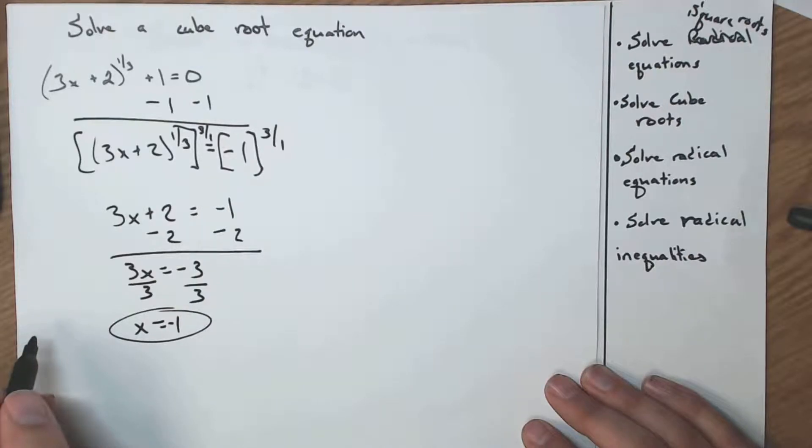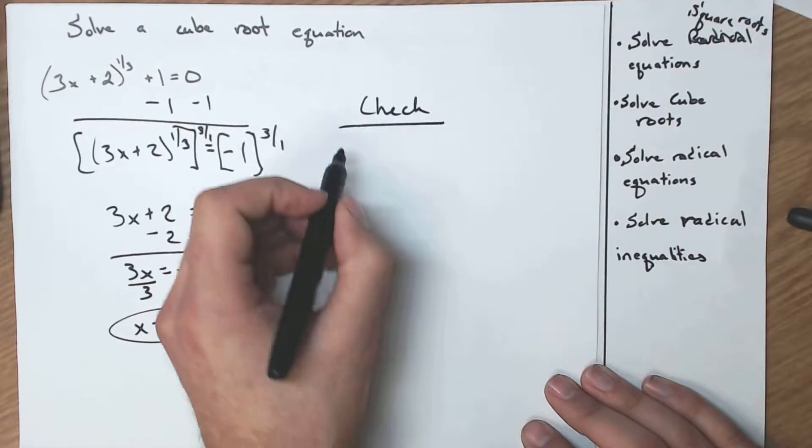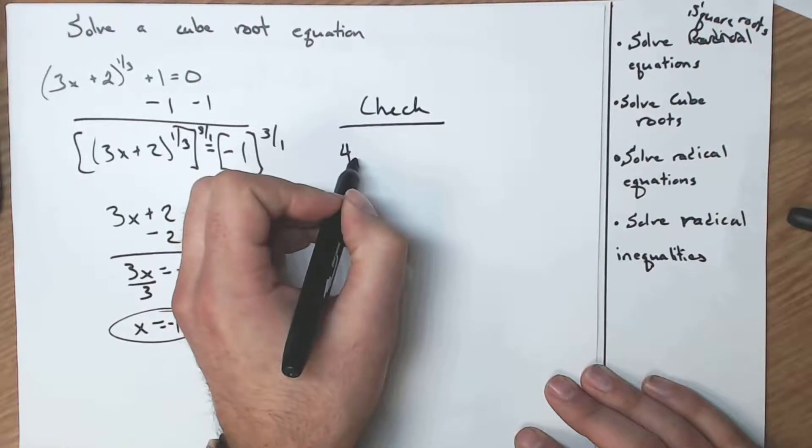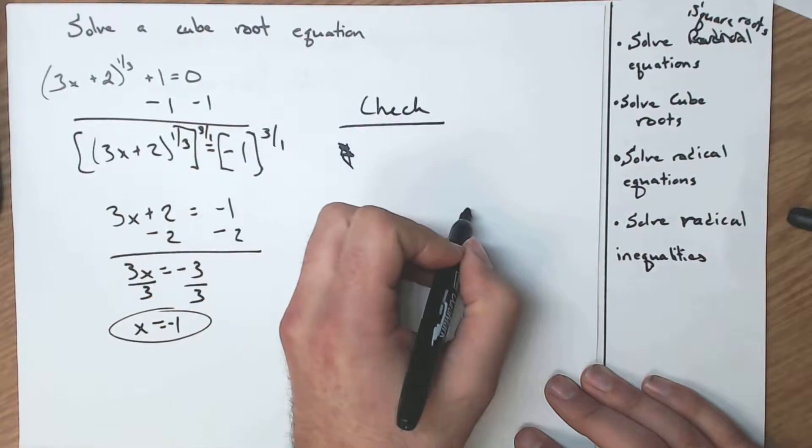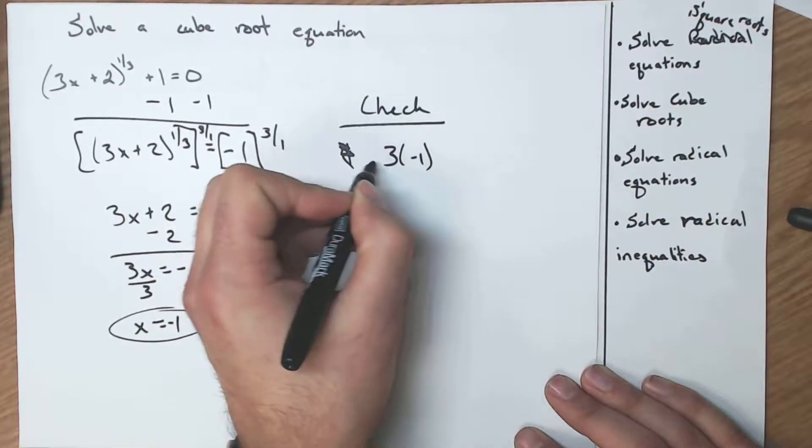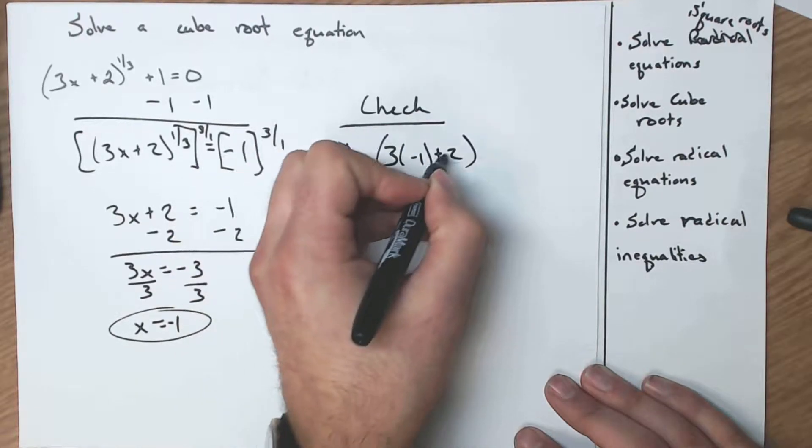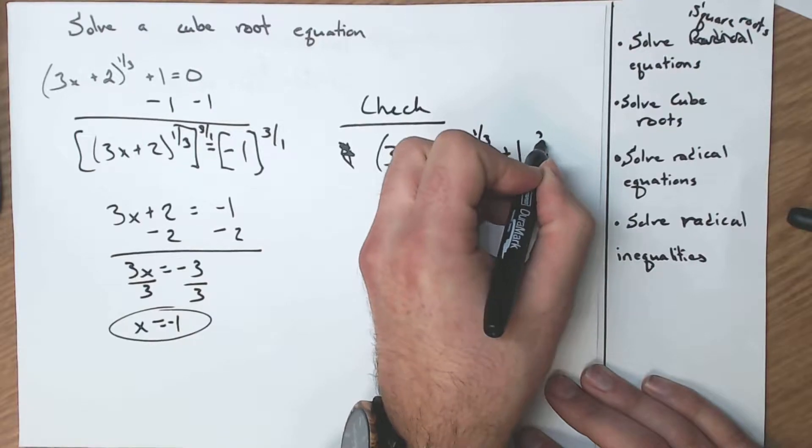Again, I have to check for extraneous solutions. Let's do that over here. This is where I'm going to check. And I have a 4. No, I don't have a 4. That's the next problem. I'm going to do 3 times negative 1 plus 2 raised to the 1 third. I'm going to add 1 to it. Does that equal 0?